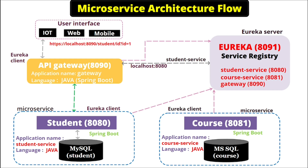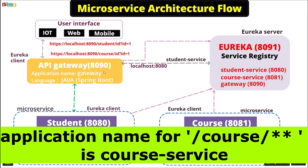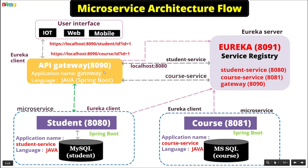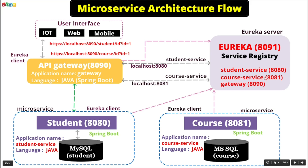Similarly, when the user interface calls the API Gateway with the URL 8090/course/id, the Gateway tries to find the application name for anything starting with 'course' in the URL and finds that the application name is course-service. It sends this to the Eureka server, which searches its directory, finds course-service, and returns the port and IP for that application. Then the API Gateway calls that particular microservice.